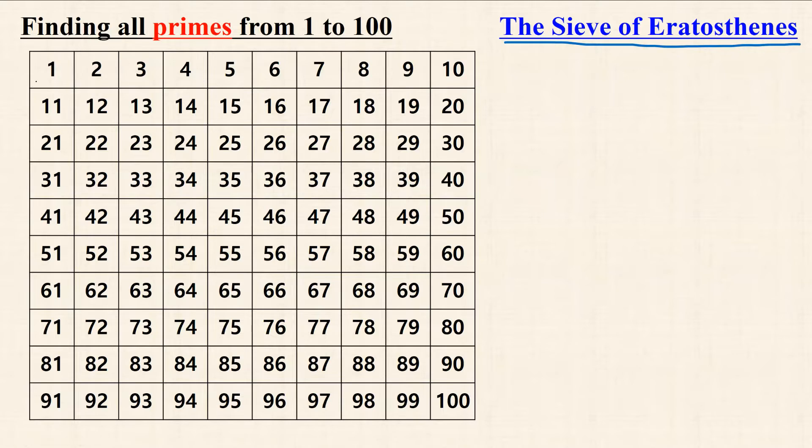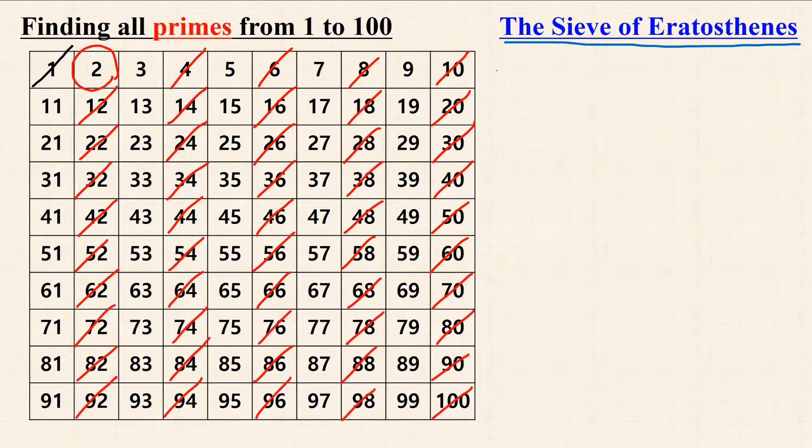So the algorithm works like this. First, delete 1. Next, delete all multiples of 2 except 2 itself. Alright, so all multiples of 2 are deleted.